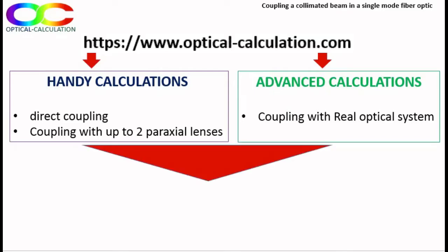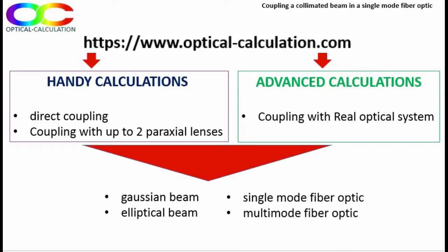Whatever the tool, handy or advanced, the laser beam can be Gaussian or elliptical and the fiber optic can be single mode or multimode. Note that coupling efficiency calculations in multimode fiber optics are also available in the application for incoherent sources and not only for lasers.